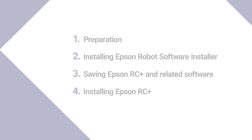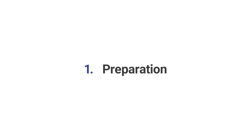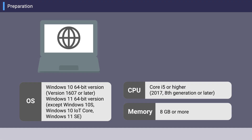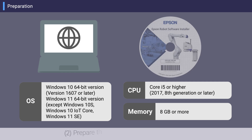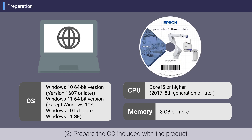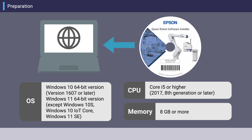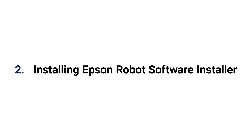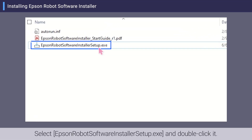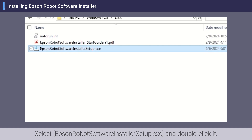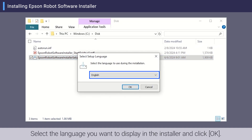Prepare a PC connected to the internet, and prepare the CD included with the product. Insert the CD into the PC, select the executable file, and double-click it.